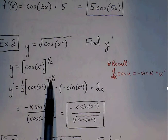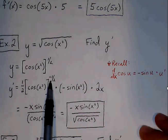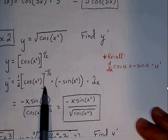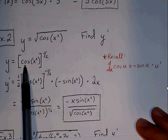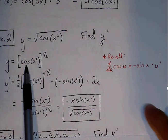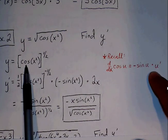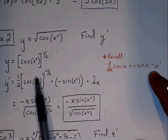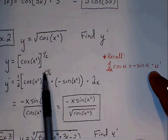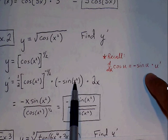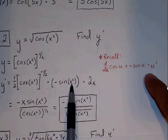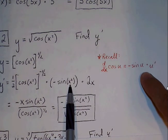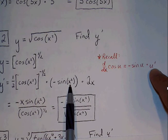Going through power rule, subtract 1 from the exponent — so 1 half minus 1 is negative 1 half. We've taken care of the outermost function's derivative. We move on to the next function, which is cosine. The derivative of cosine is negative sine of u times u prime. So cosine of x squared becomes negative sine of x squared, where x squared is the u value. The innermost function is x squared, so the derivative, u prime, is 2x.